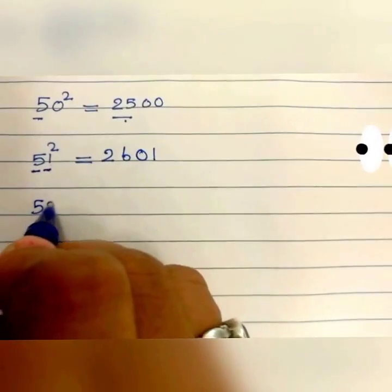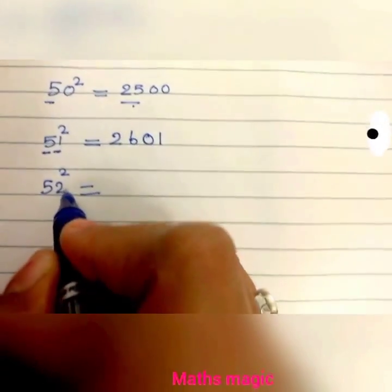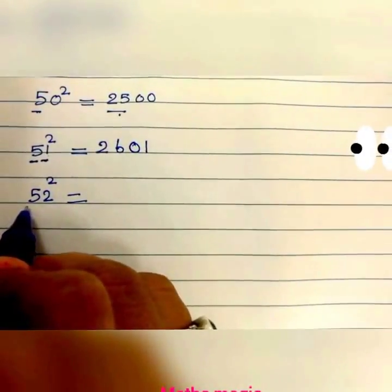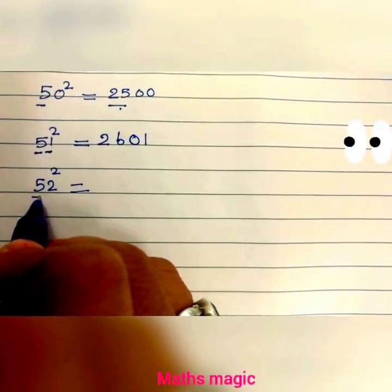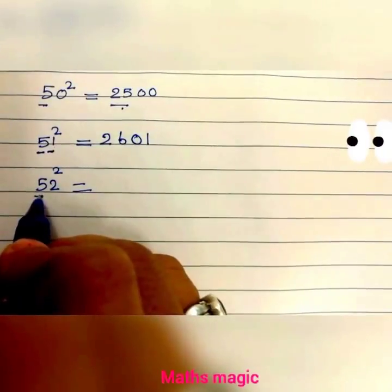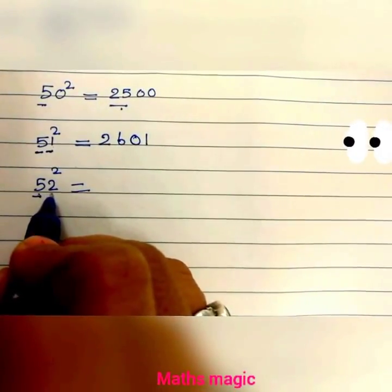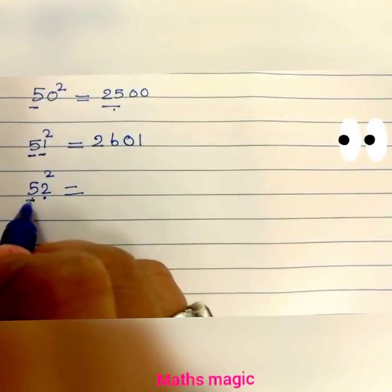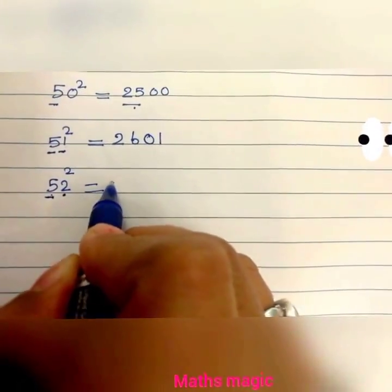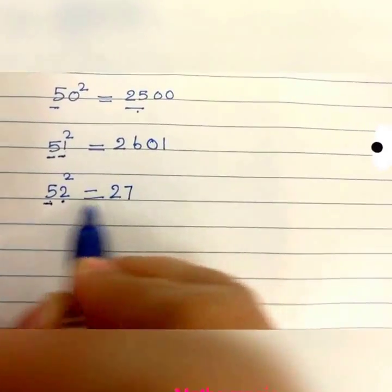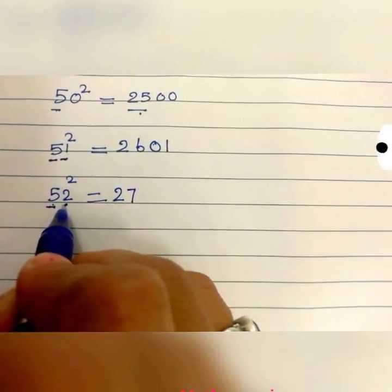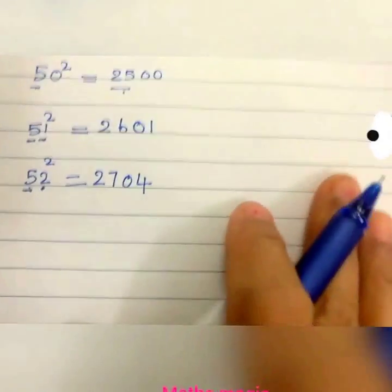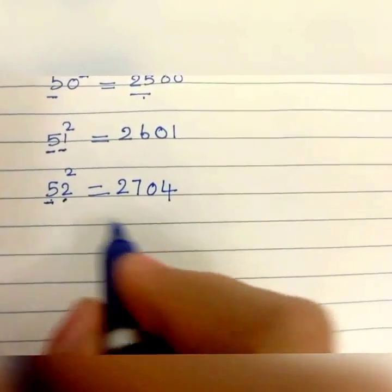What is 52 squared? Here, 5 squared is 25. Since 52 is 50 plus 2, we add 2 to 25: 25 plus 2 is 27. Then take the square of 2: 2 squared is 4, written as a 2-digit number: 04. So 52 squared is 2704.